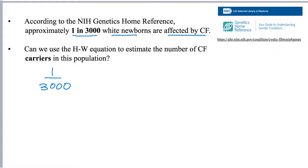Since 1 in 3,000 represents the frequency of the recessive phenotype — the result of the homozygous recessive genotype — that value equals q squared. What we are looking for is the number of carriers. To be a carrier, you must have the allele but not two copies, so you don't exhibit symptoms. The carrier genotype is heterozygous, represented by 2pq in the Hardy-Weinberg equation.